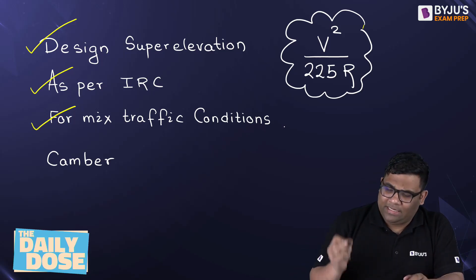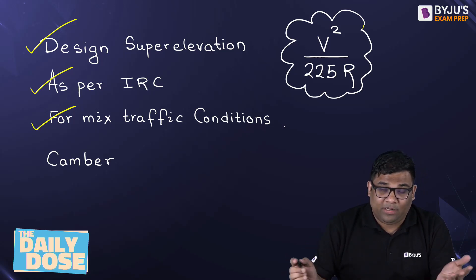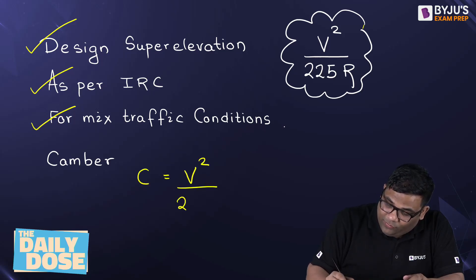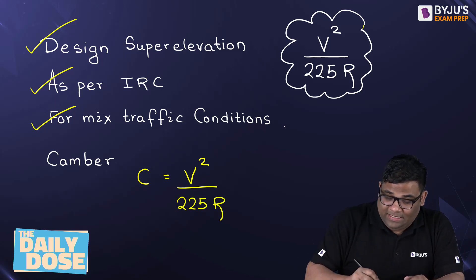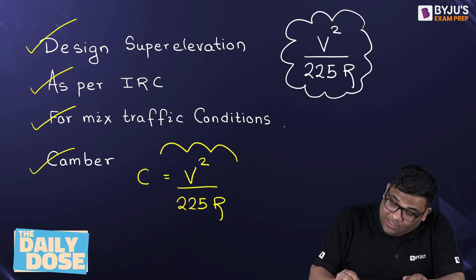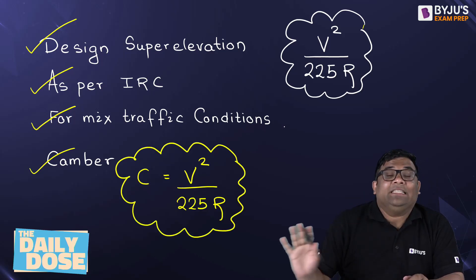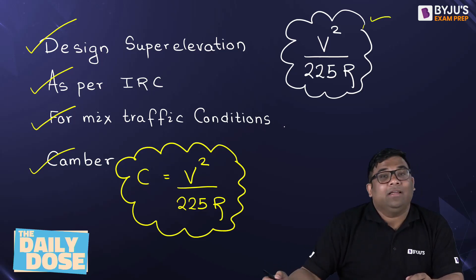If they mention that camber is provided to satisfy the super elevation, then that camber percentage will be equal to V square by 225R. In all these cases, when you see these terms or terminologies, directly go for the formula V square by 225R.